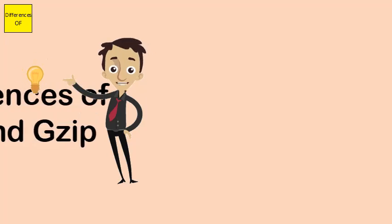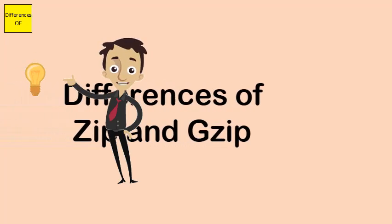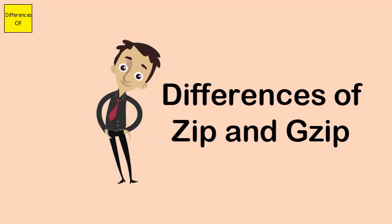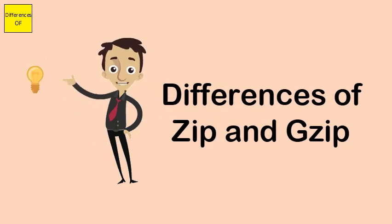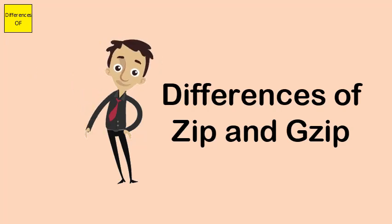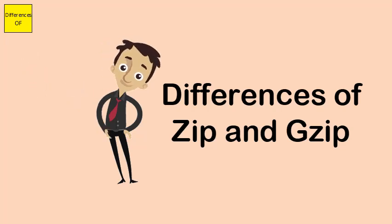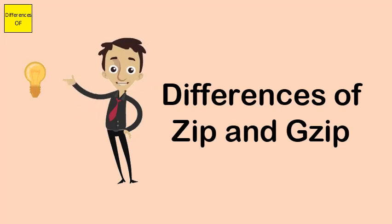Differences between zip and gzip: zip is less effective compared to gzip. Gzip is much better compared to zip. Zip performs both compression and archiving, while gzip only does compression and needs another tool to archive. Zip enables extraction of a single file.